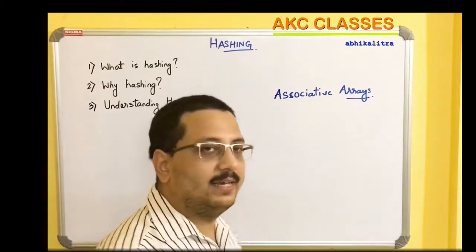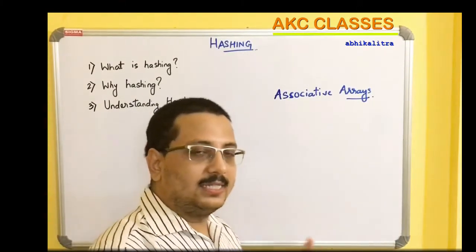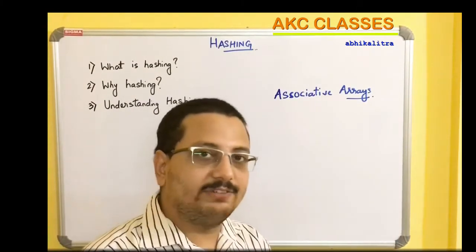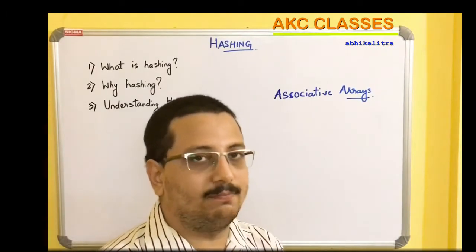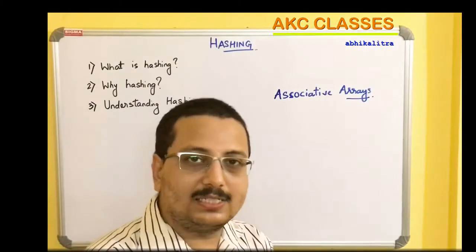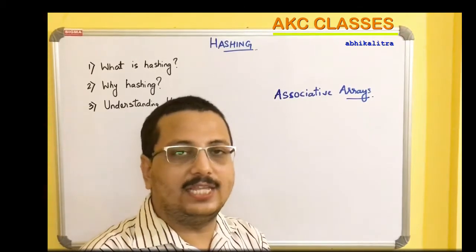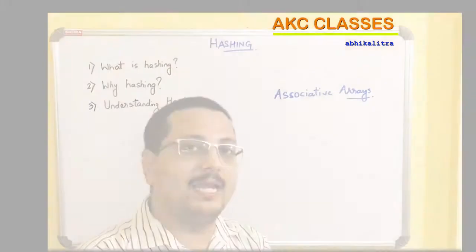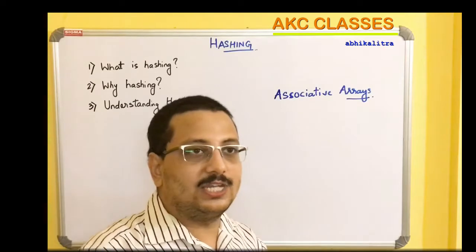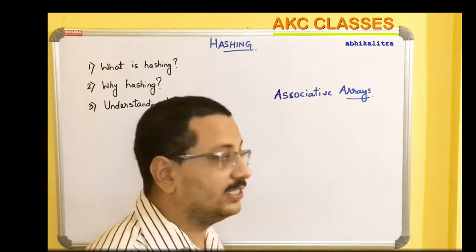What is an associative array? An associative array is a kind of data structure which is similar to that of an array, but is not indexed by integers. That means the elements can be indexed by different kinds of data types such as strings, alphabets, or many different kinds of indexing.